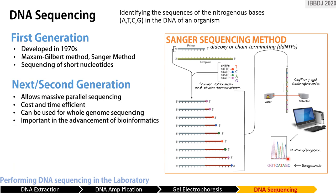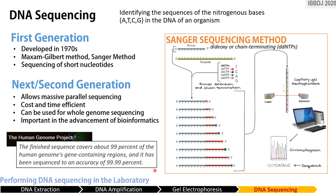Next generation sequencing allows massive parallel sequencing that is faster and more cost effective, and enables whole genome sequencing. Improved significantly by advancements in bioinformatics, a key product is the Human Genome Project, launched in 1990 and completed in 2003. The aim of the HGP was to determine the DNA sequence of the entire human genome, covering 99% of it with an accuracy of 99.99%. The resulting DNA sequence must be compared to existing literature and databases to interpret its meaning.